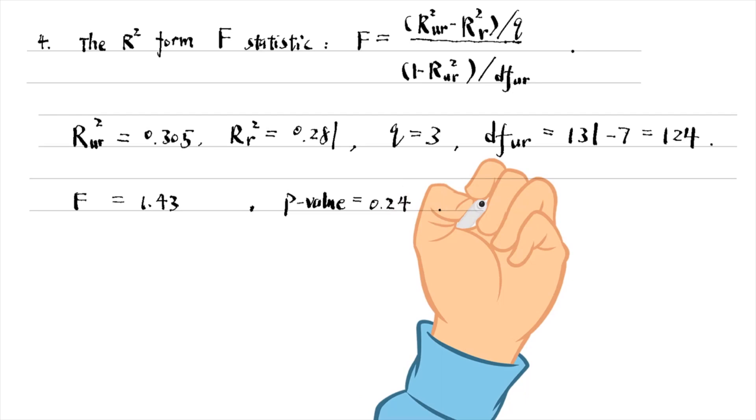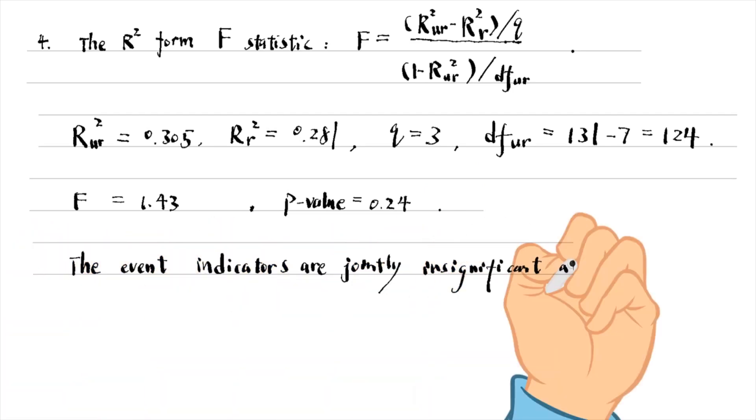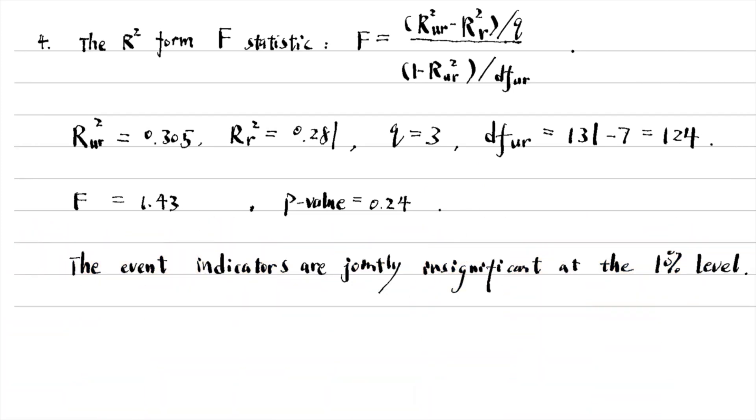We fail to reject the null hypothesis that the three dummy variables are all zero. In other words, the event indicators are jointly insignificant at the 10% level or even the 20% level.